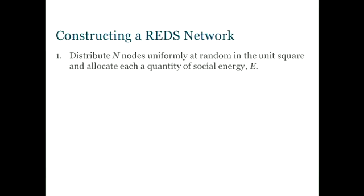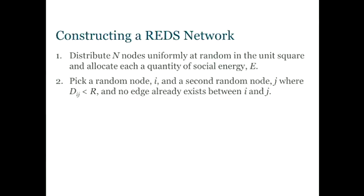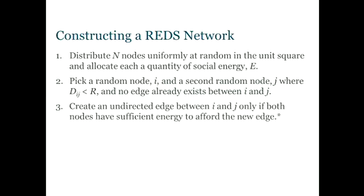So how we build a network is very simple, we throw our nodes into a unit square, we allocate each of them the same amount of energy, we pick a node at random, we pick another node that's nearby at random. If both nodes can afford the edge, we add the edge. Keep doing that until you can't add any more edges to the network.